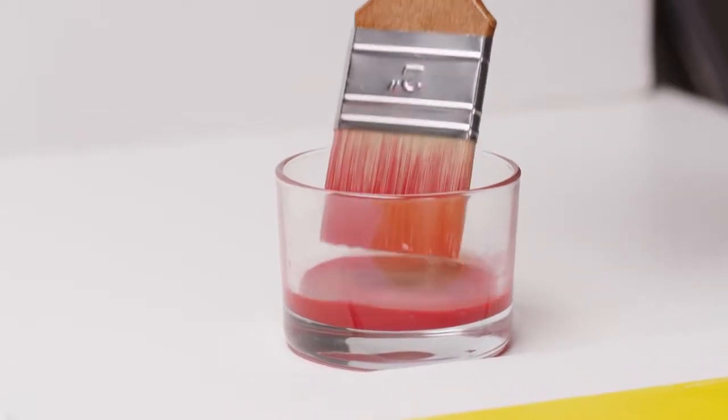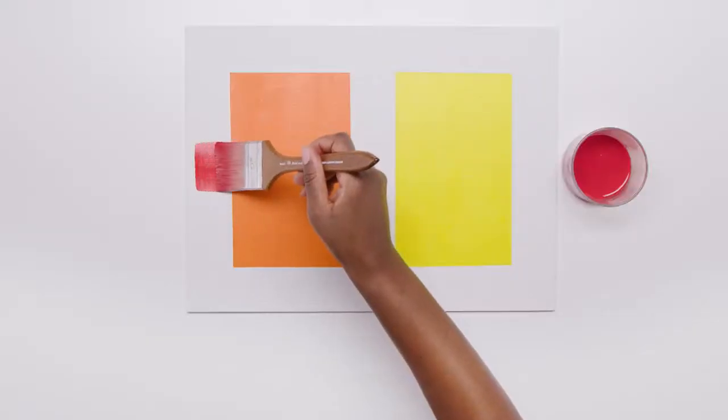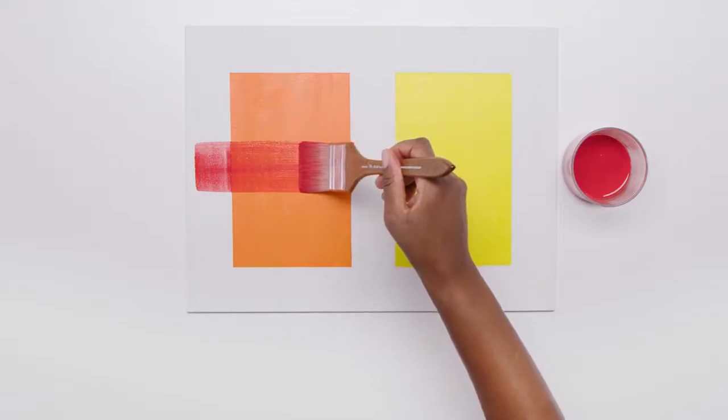Glazing adds a lovely luminosity to colour and is a great method for working in layers over dry colour to change the value and hue.